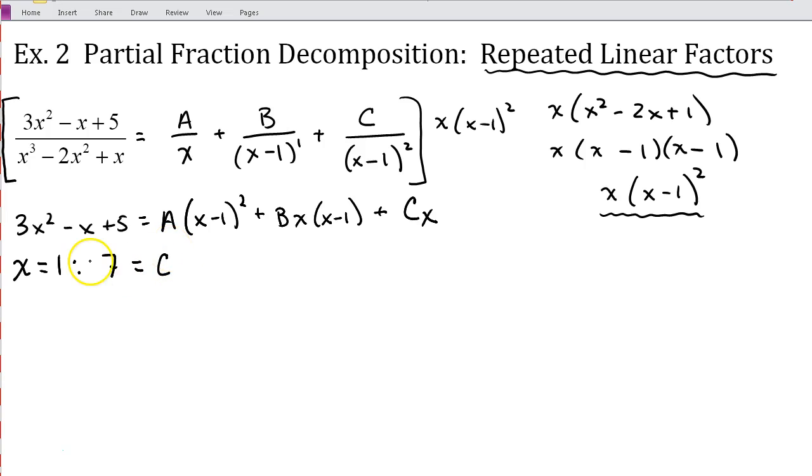So we get that C is equal to 7. Next, I'm going to use x is equal to 0. So if I plug 0 in on the left, I get 5. And when I plug 0 into these two terms, I'm going to get 0 for both of those. When I plug 0 in here, I'm going to have negative 1 squared, which is 1. So this just gives us that A is equal to 5. So that worked out well.